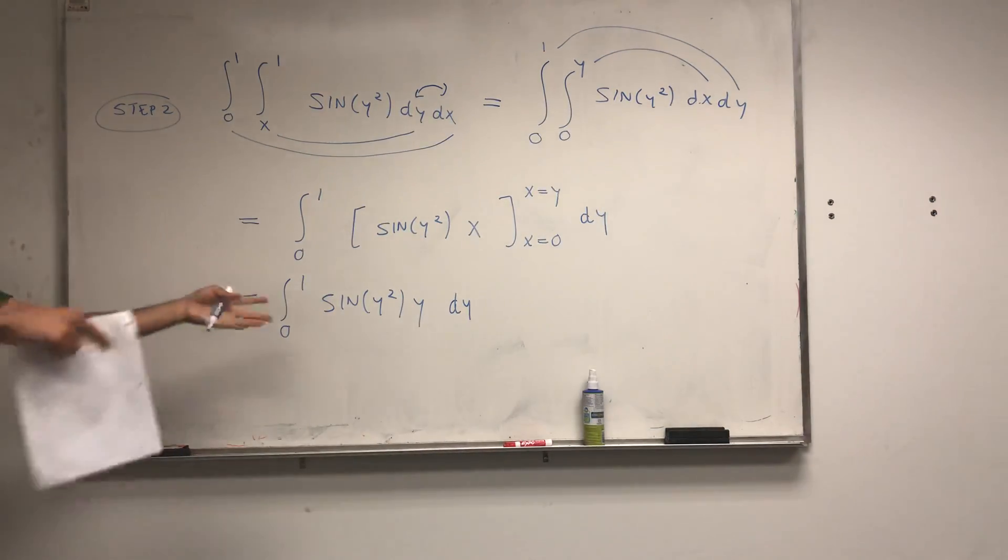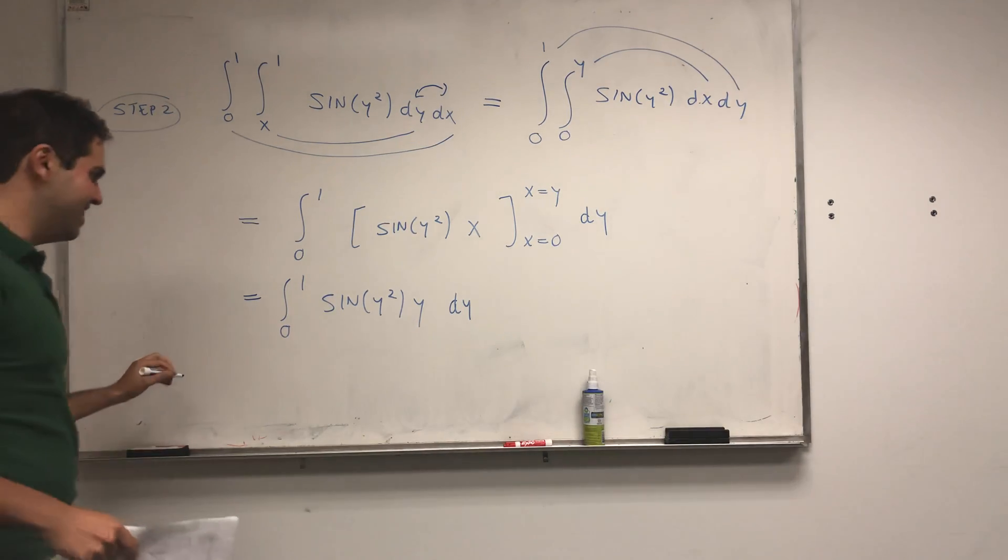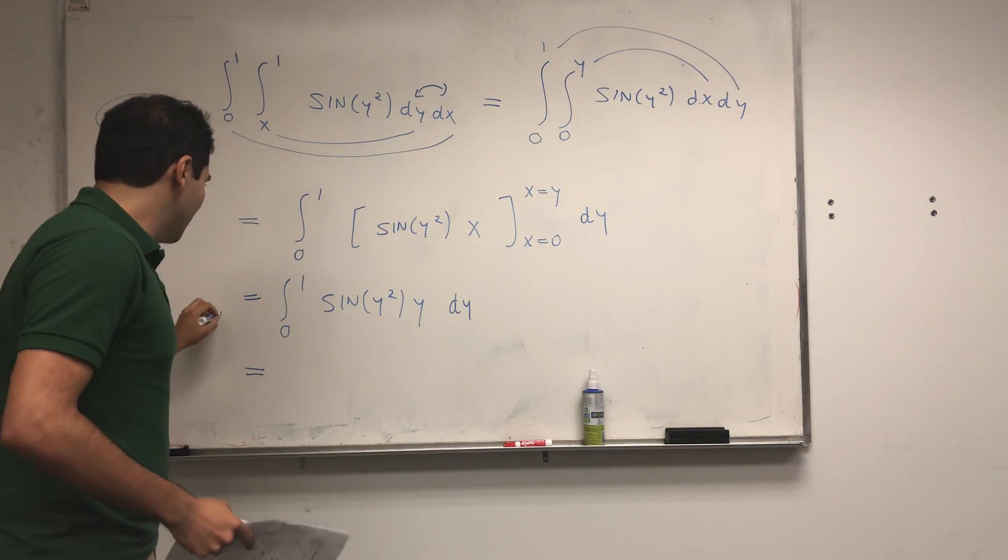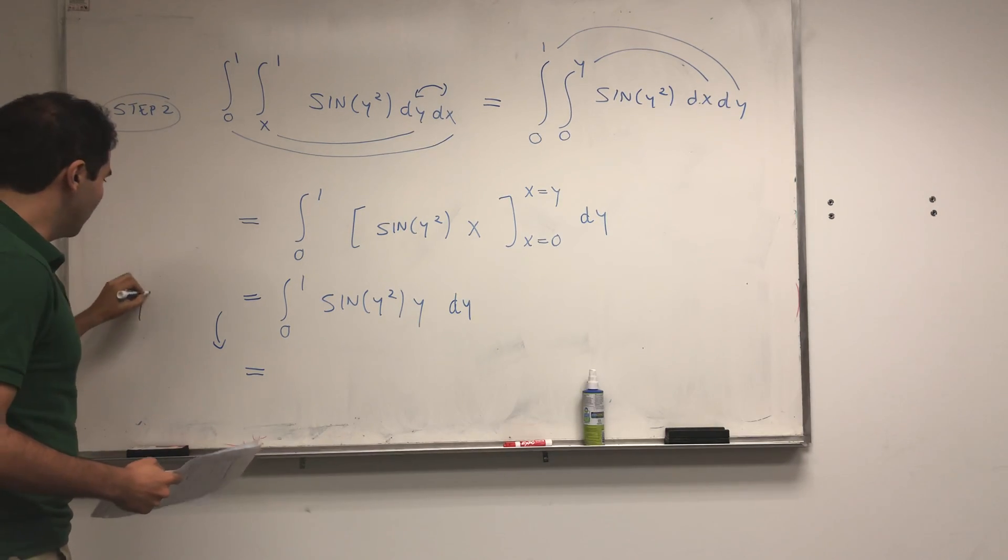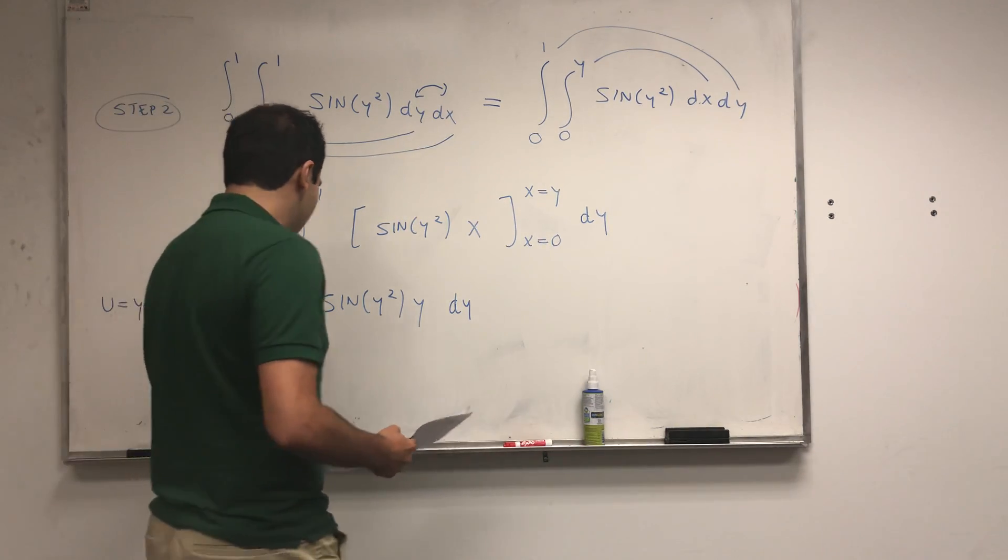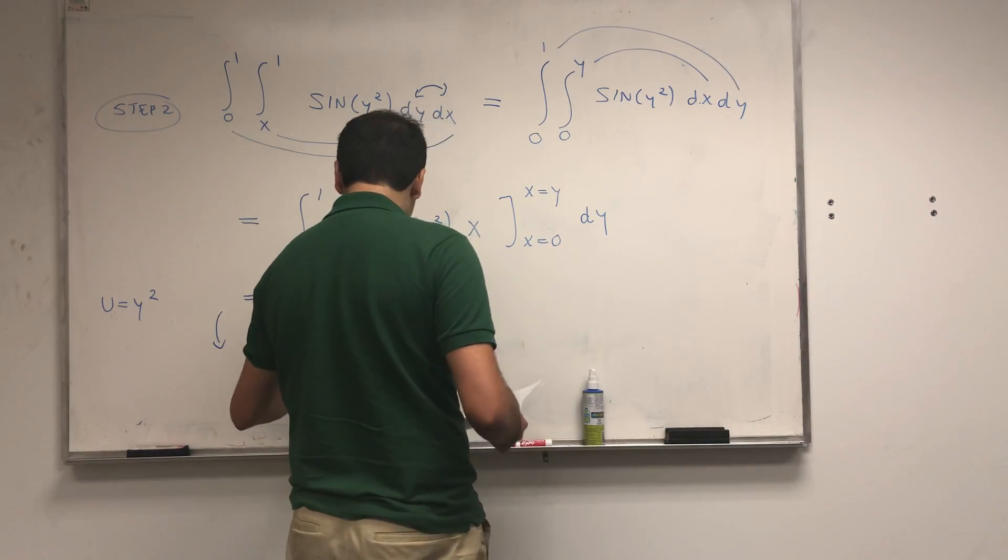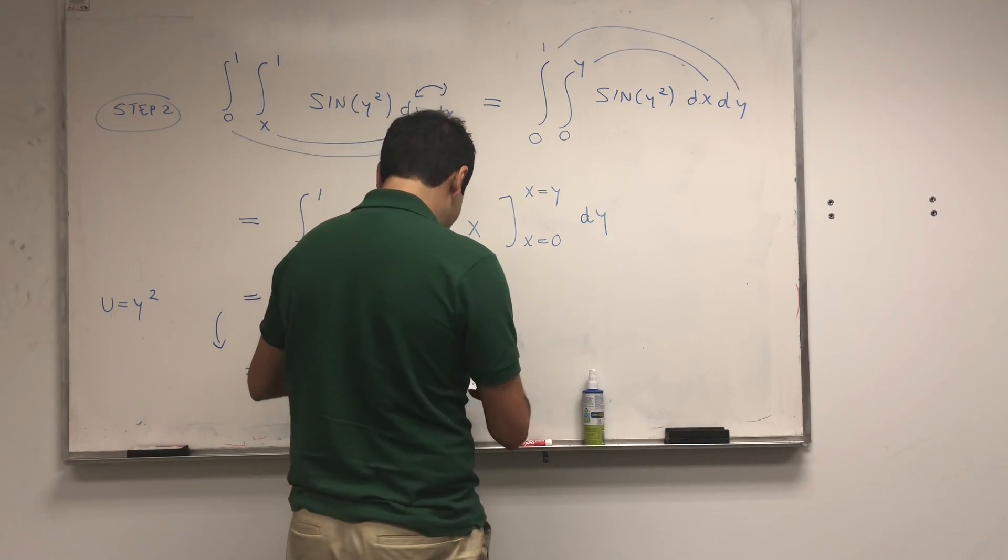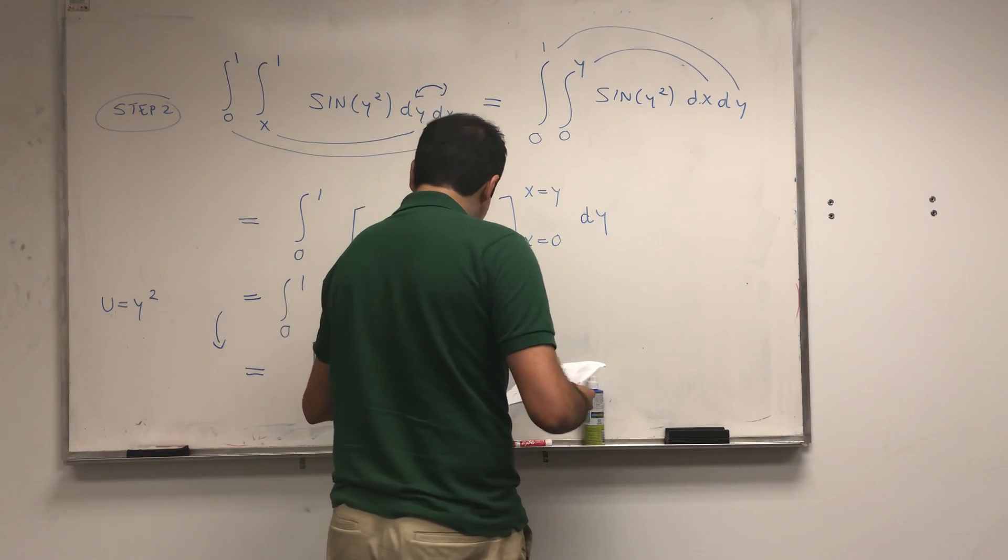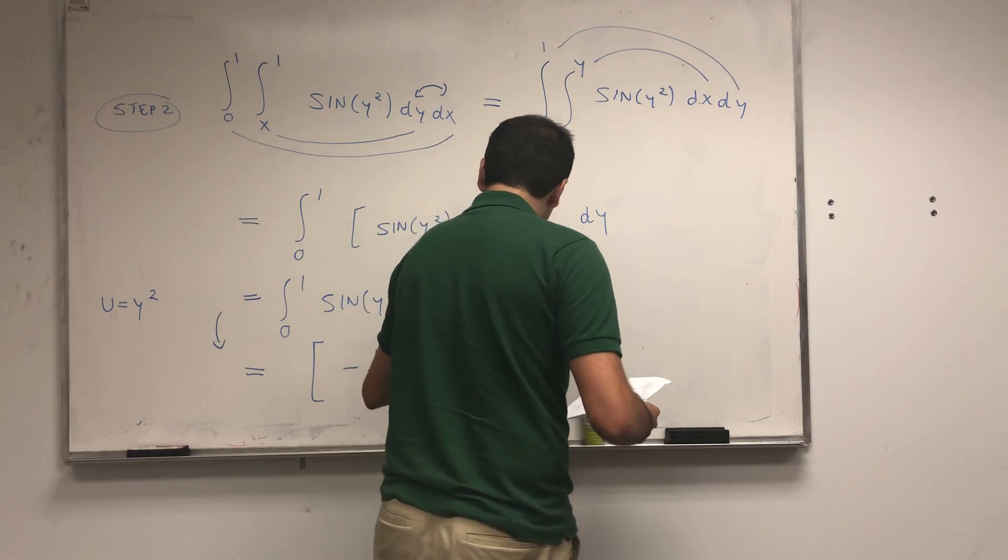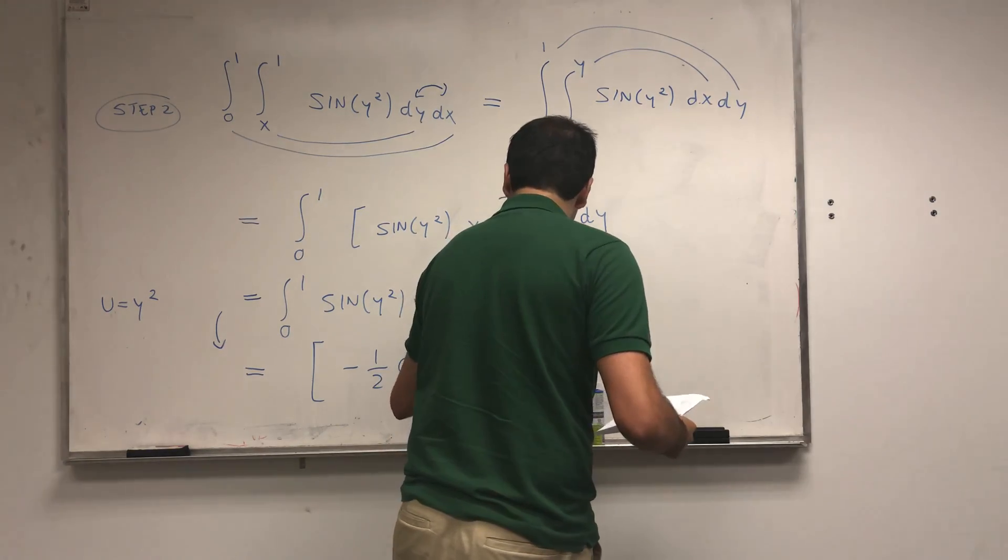And this even a single variable calculus student can integrate because if you want you use a substitution, so u equals to y squared, and in the end this becomes I believe minus, let me double check though, so minus one half cosine of y squared from zero to one.